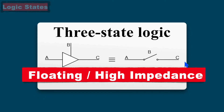To avoid the floating or high impedance state, we use either a pull-up resistor or a pull-down resistor. Let's understand now how we can remove this floating state with the help of pull-up or pull-down resistors.